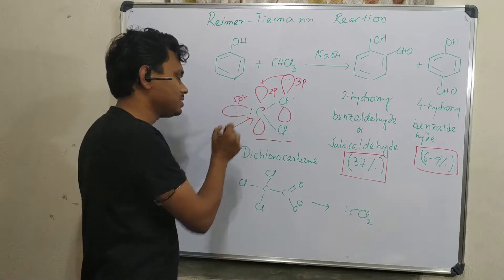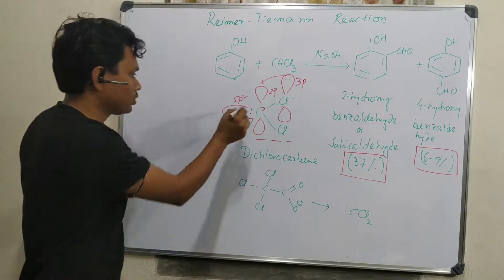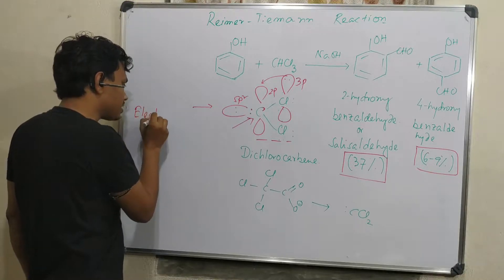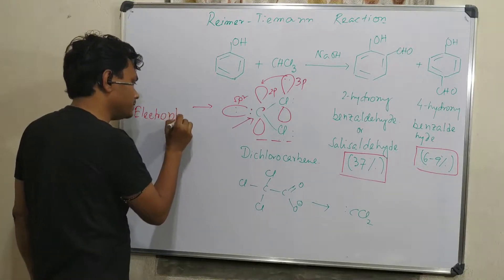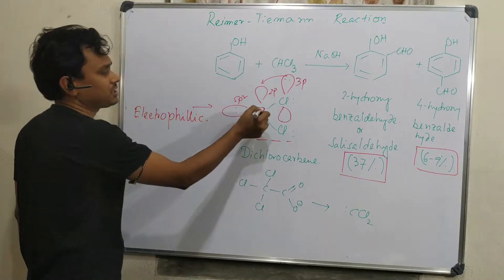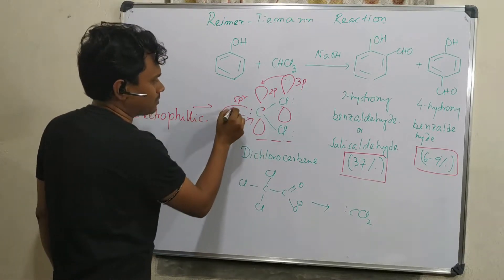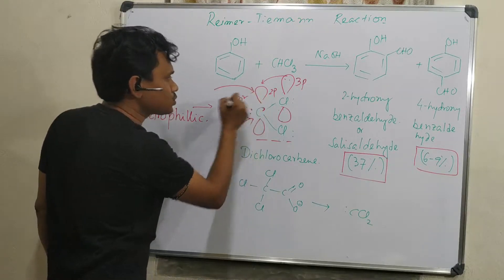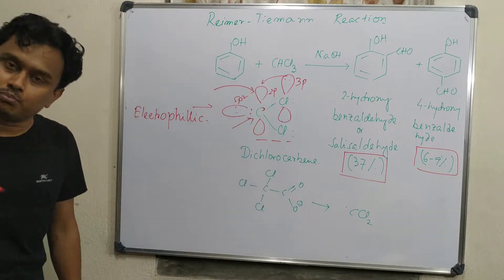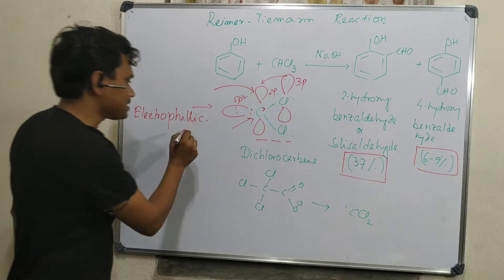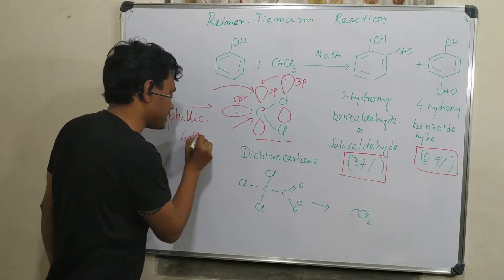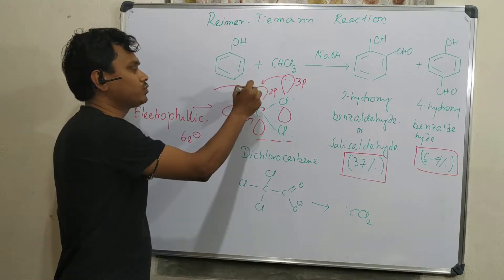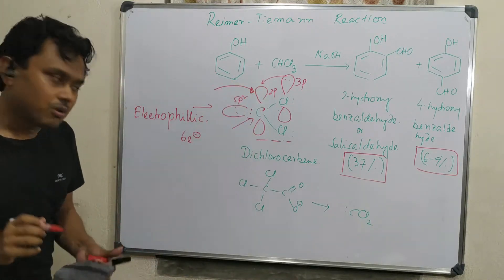Most importantly, it is an electrophilic carbene, meaning this is an electron-deficient carbon center. Electrophilic attack happens on this vacant 2p orbital. This is a 6-electron species, so 2-electron deficient. That's why electrophilic attack of 2 electrons on this is possible.